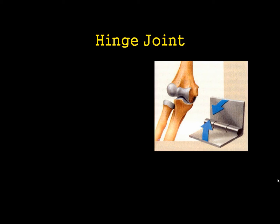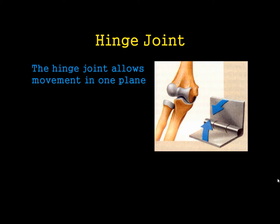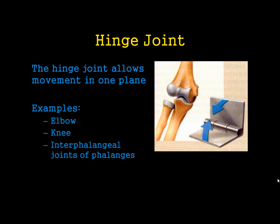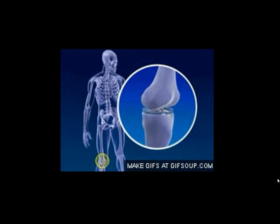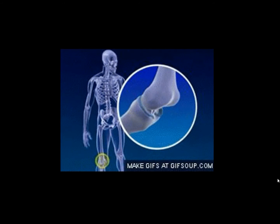Then we have the hinge joint. The hinge joint, self-explanatorily, works a little bit like a hinge. It only really allows movement in one plane — it's not very multidimensional — but the elbows and the knee are great examples of this. They just allow flexion and extension. As you can see, the hinge joint in the knee or the elbow is very similar to a hinge in real life.